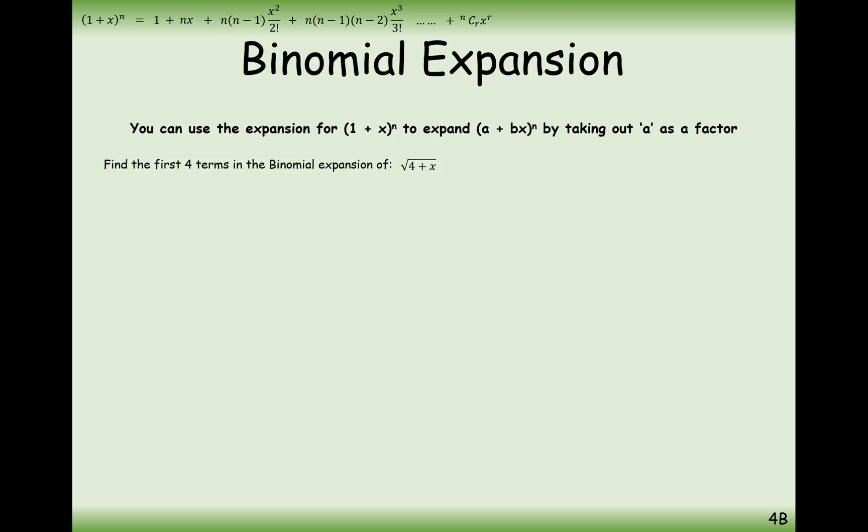We're going to look at examples of the binomial expansion where we can use this 1 plus x to the power of n formula to deal with things like 4 plus x all square rooted. So the first thing you'd want to do is turn this into 4 plus x to the power of a half.